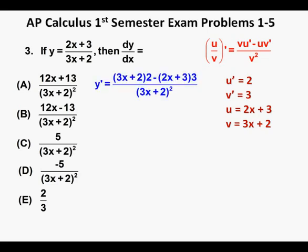So putting the elements in place for the quotient rule we get y prime equals quantity 3x plus 2 times 2 minus quantity 2x plus 3 times 3 over quantity 3x plus 2 squared.